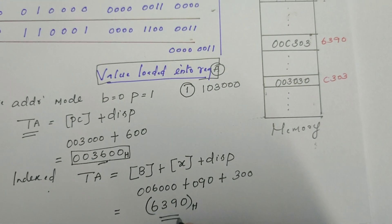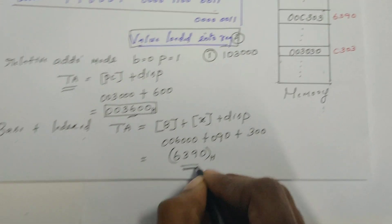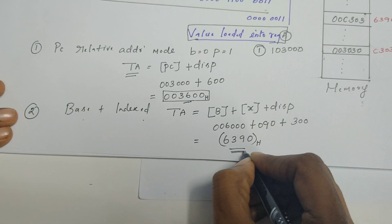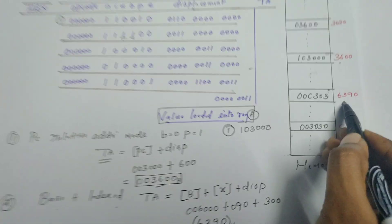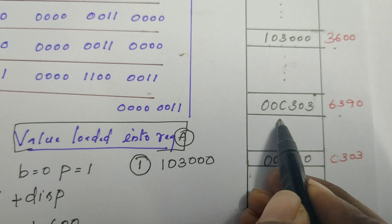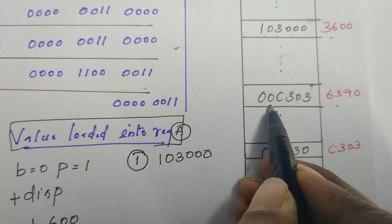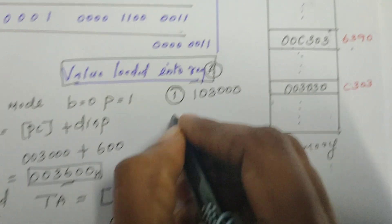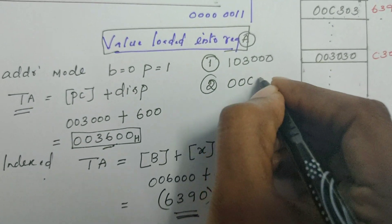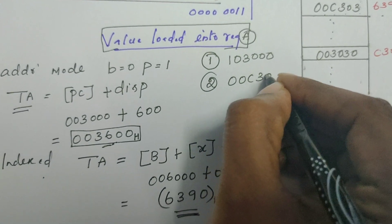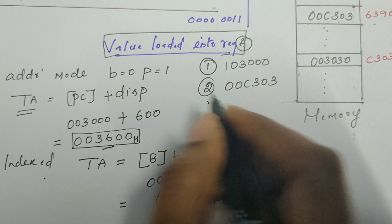We found the target address 0x6390. The data available at that address is 0x00C303. This is the value to be loaded into the accumulator as per the second instruction.